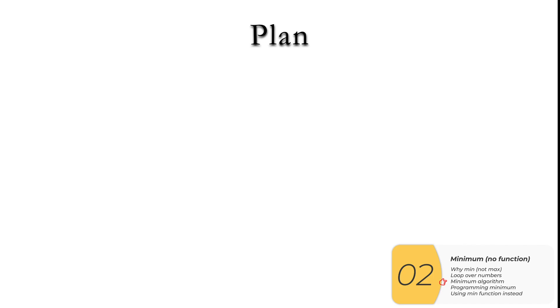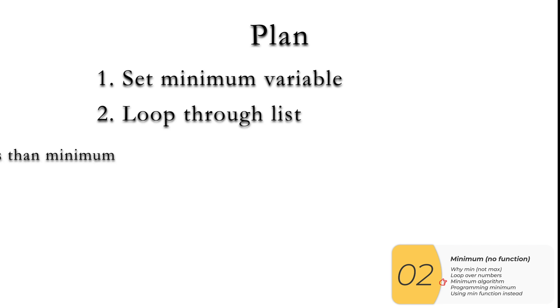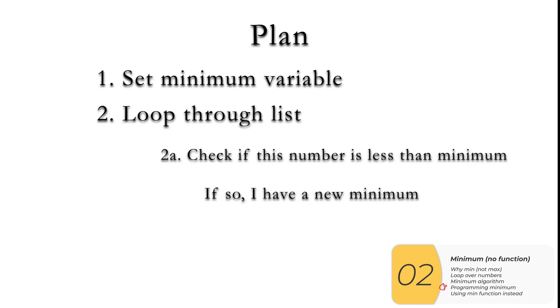Here's the plan. I'm going to create a variable that stands for the minimum item in my list. I'm going to loop through the list and check them one by one. If the one I'm checking is less than my minimum, well, I have a new minimum. So let's program that right now.